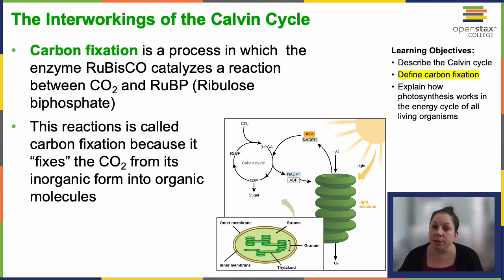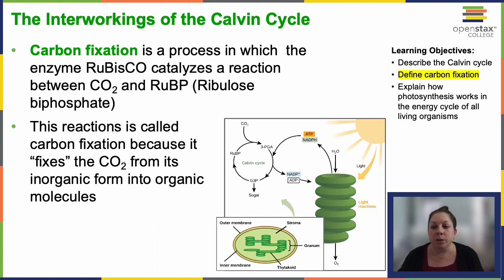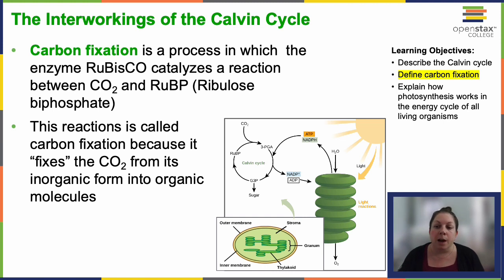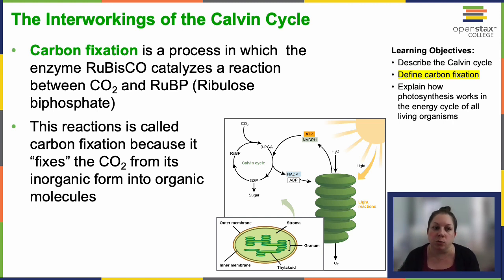In the stroma, along with CO2, there are two essential components necessary to initiate the cycle: an enzyme called RuBisCO, and a molecule called ribulose bisphosphate, which we'll shorten to RuBP. RuBP, which has five carbon atoms and a phosphate group at both ends, combines with carbon dioxide through the action of RuBisCO, and creates a six-carbon compound that rapidly converts into two three-carbon compounds in a process called carbon fixation. We're taking gaseous carbon and fixing it into a solid form.